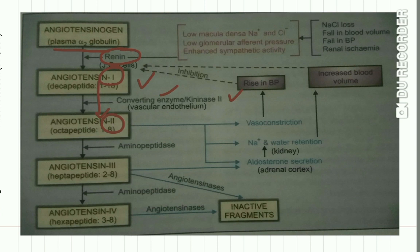Angiotensin 2 has a short half-life because it undergoes several degradations. It is acted upon by aminopeptidases to form angiotensin 3 and 4, and finally angiotensin 4 is acted upon by angiotensinases to form inactive fragments. This is the life cycle: angiotensinogen forms angiotensin 1, which is converted to angiotensin 2 by converting enzyme, then further degraded to angiotensin 3, 4, and inactive fragments.